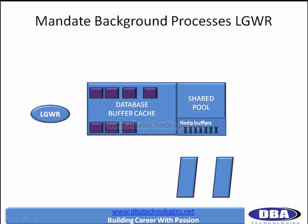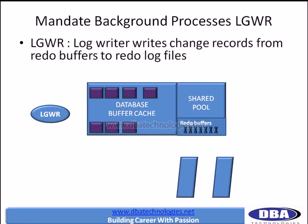Now let's look at the next important background process, which is Log Writer — a very important one. Log Writer is a background process which writes the information from redo log buffers to redo log files. It is very simple to understand because it is named very appropriately. When Log Writer gets invoked, it goes and reads the redo log buffers, which contain all the change records in the form of change vectors, and all that information will be written back to the redo log files.